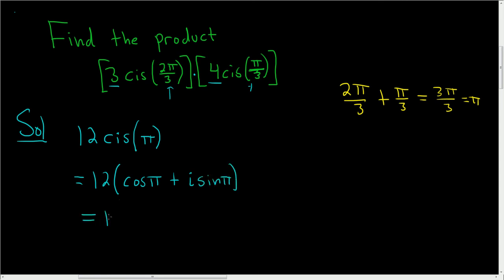So this is 12, and then the cosine of π is negative 1, and the sine of π is 0. So 12 times negative 1 is negative 12. And that's the final answer. I hope that made sense.